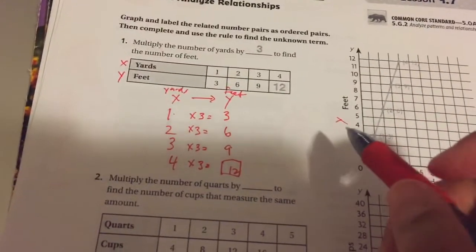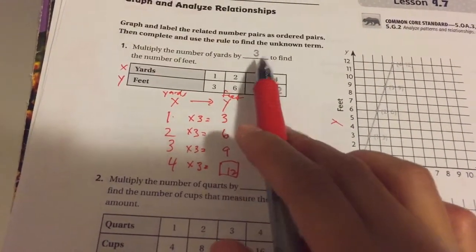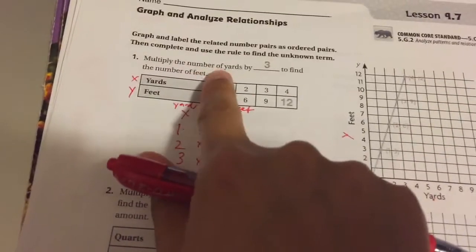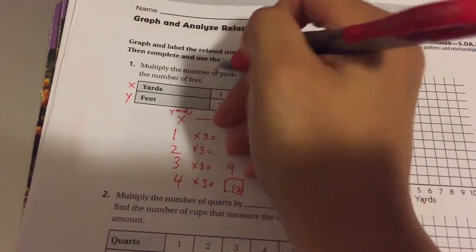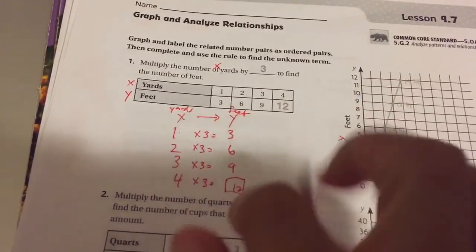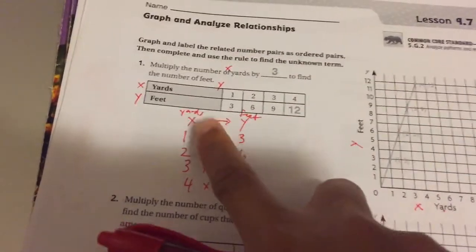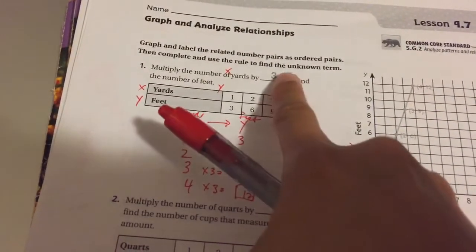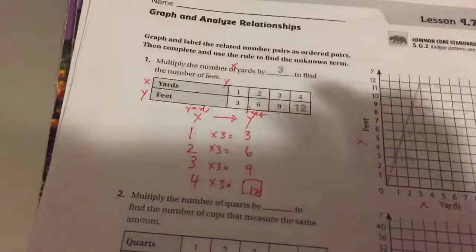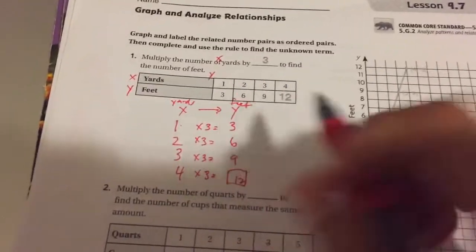The next thing we're going to do is find our rule, which is the number of yards is our X. So what are we multiplying the X by to find the number of feet, which is right here, our Y? How do we get from X to Y? We multiply it by 3. So that's how they got the rule. And it's nice because they provide us the sentence screen.